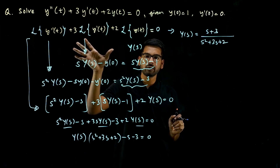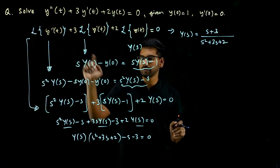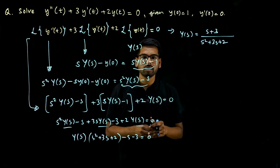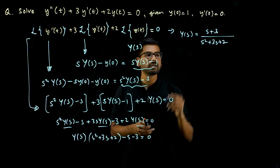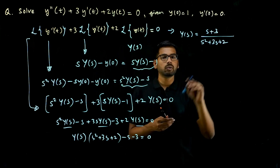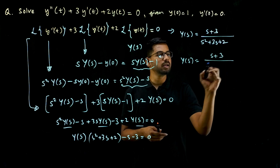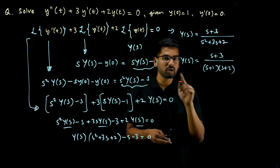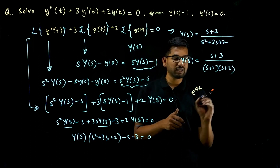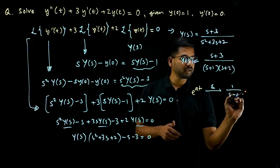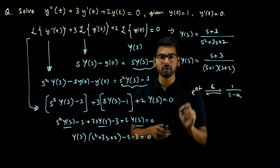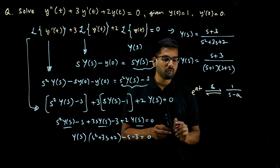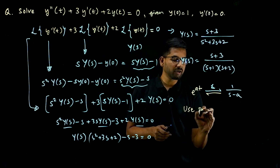So from the differential equation, taking the Laplace transform and using the identities for Laplace of Y'(t) and Y''(t), we get Y(s) = (S + 3) / (S² + 3S + 2). Factorizing the denominator quadratic gives Y(s) = (S + 3) / [(S + 1)(S + 2)]. To take the inverse Laplace transform, we use the identity: Laplace transform of e^(at) is 1/(S − a), so we need to express Y(s) in terms of 1/(S − a) using partial fractions.